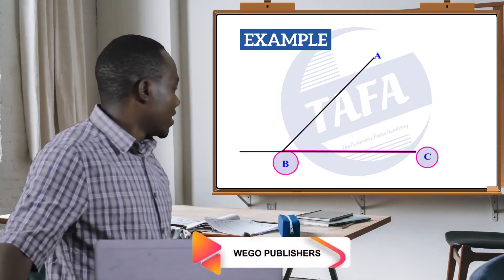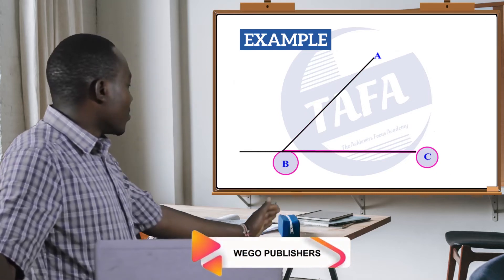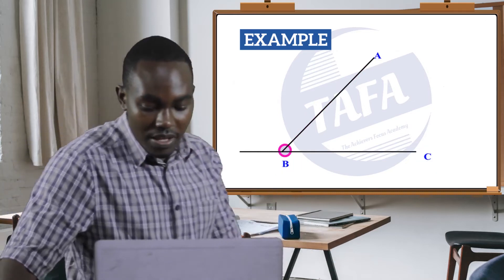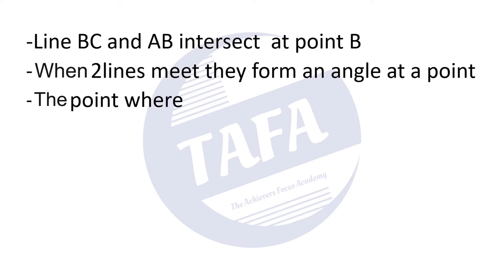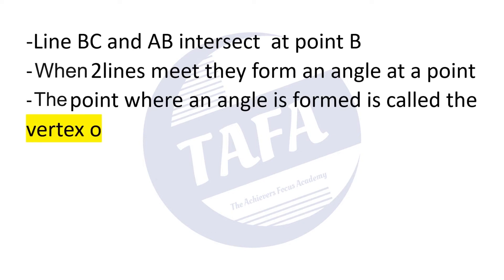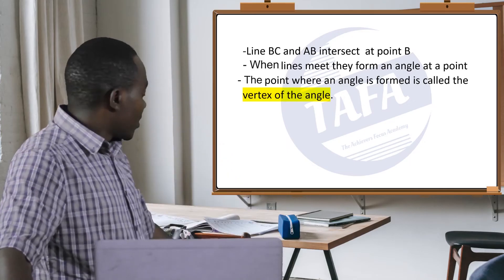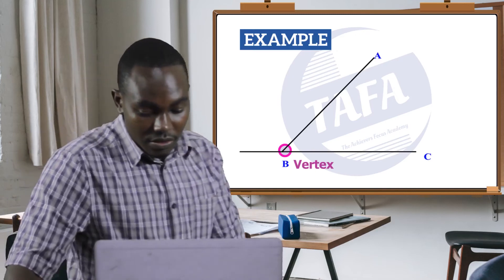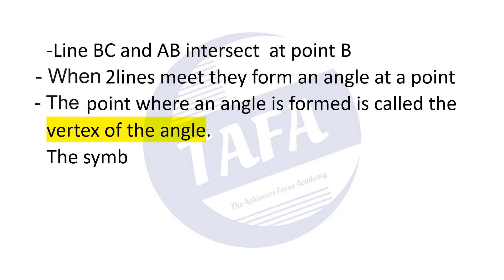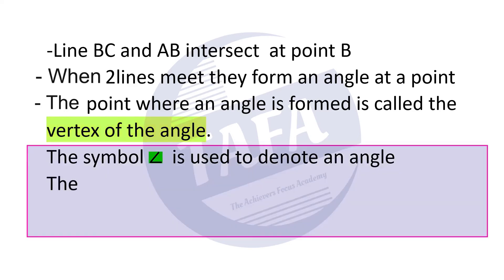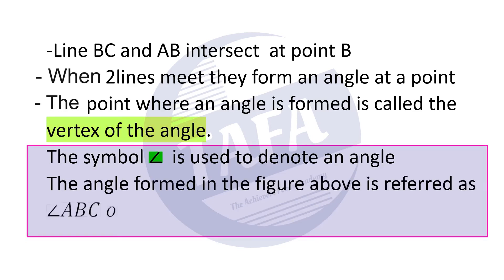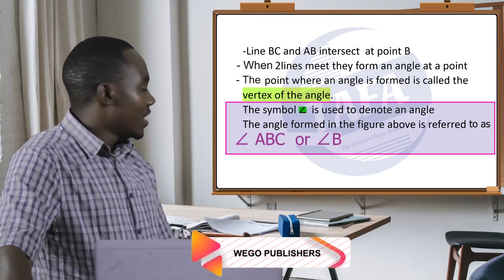Line AB and line BC are forming an angle at point B. The point where an angle is formed is called the vertex of the angle, so our vertex is point B. This symbol is used to denote an angle, so the angle formed in the figure is referred to as angle ABC, or simply angle B.